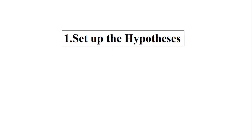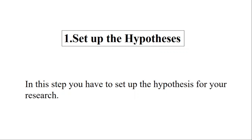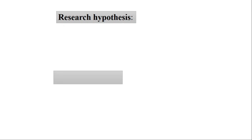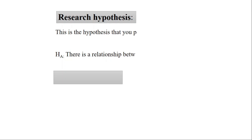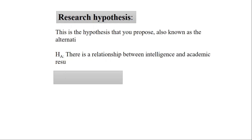In the first step, you have to set up the hypothesis for your research project. There are two major types of hypothesis used in hypothesis testing. The first is the research hypothesis, also known as the alternative hypothesis, denoted by HA, where A stands for alternative. For example: there is a relationship between intelligence and academic results.